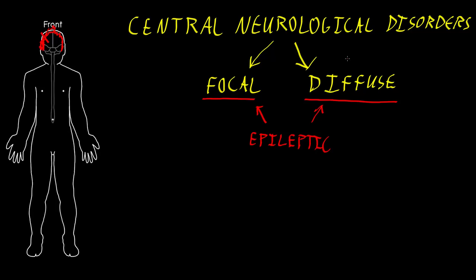So this is a tough category to introduce in a short video, because the central nervous system does so many things that focal or diffuse dysfunction can cause a large number of syndromes, and a large number of different types of disorders and pathologies can affect the central nervous system. This makes this category particularly challenging for making the diagnosis of these cases, but obviously there's a lot more detail we can go into in later videos.